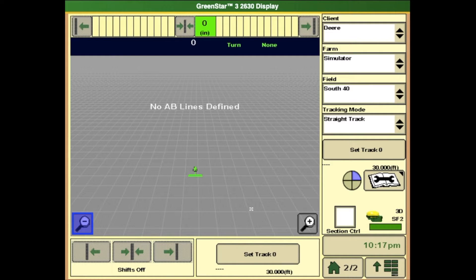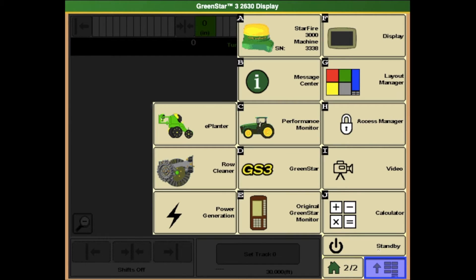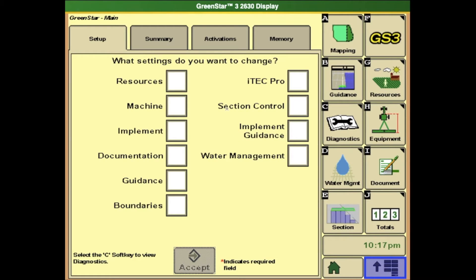To find the planter measurements, select the menu button in the bottom right hand corner from the main screen. In the menu, select letter D, which is the GreenStar 3 button. On the GreenStar page, select letter H, the equipment tab.